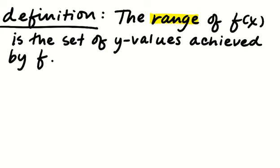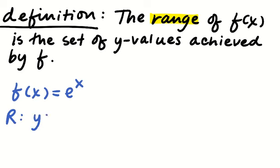Next we'll talk about range. The range of a function y = f(x) is the set of y values actually achieved by f — some textbooks call this the image of f. We'll most likely determine the range by looking at the graph. For example, f(x) = e^x: e is a positive number, and no matter what power you raise a positive number to, it's always positive. So the range is y greater than 0.